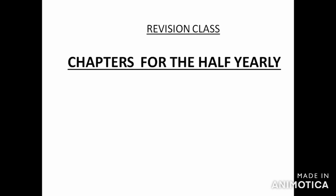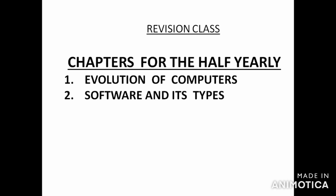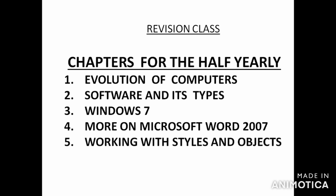Here are the chapters for the half-yearly examination. Lesson one is Evolution of Computers. Lesson two is Software and Its Types. Lesson three is Windows 7. Lesson four is More on Microsoft Word 2007. Lesson five is Working with Styles and Objects. Lesson six is Working with Tables. This is the syllabus for your half-yearly examination and these are the chapters we will be revising.